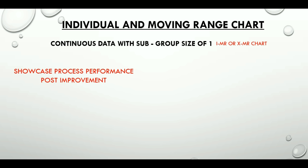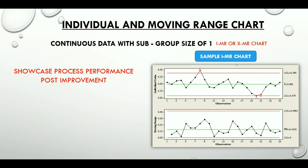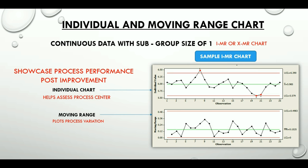IMR chart is extensively used to showcase process performance post-improvement, i.e., pre and post-analysis. It is a combination of two charts. The top one is the individual chart, which helps in assessing the process center. The bottom one is the moving range chart, which plots process variation. The number of data points in the moving range chart will always be one less than the individual chart, because moving range is calculated by taking the absolute value of the difference between each measurement and the previous one. Important to note is that variation in an in-control process is usually inherent and random.